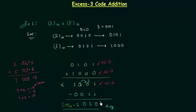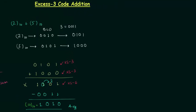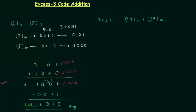So this is all for example number 1. Now we will move to the next example, which is very important. In this example we have to perform the addition 27 plus 39.